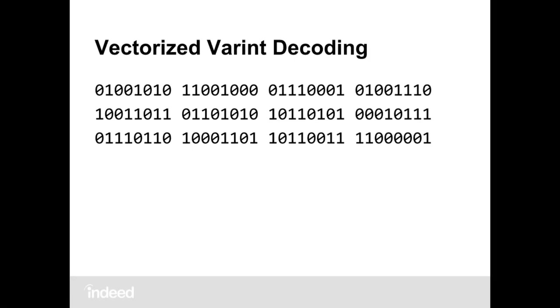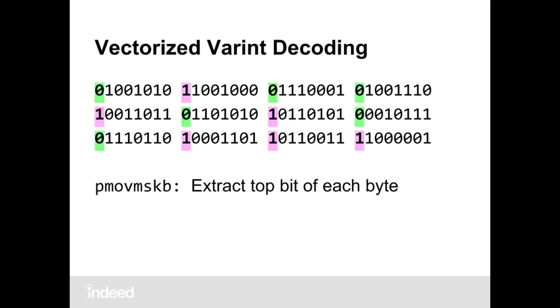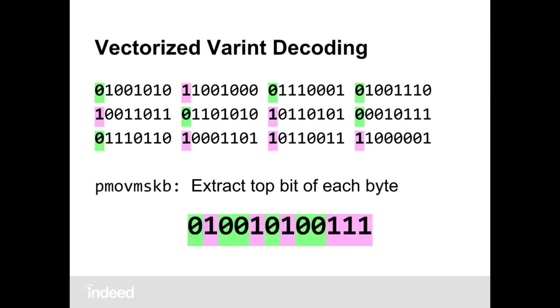We have our own varint decoder that decodes 12 bytes at a time. The first thing we do is use the Intel PMOVMSKB instruction to extract the top bit of each of those 12 bytes into a 12-bit number. Since 2^12 is 4,096, we look this number up in a 4,096-entry lookup table. This lookup table tells us how many ints we'll decode, the sizes and offsets of the varints, the length of the longest varint, and how many bytes of input to consume.